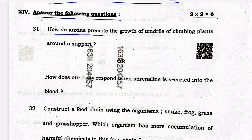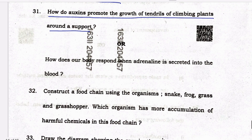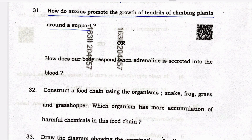How do auxins promote the growth of tendrils in climbing plants around a support? Auxins promote the growth of tendrils by stimulating cell elongation on the shaded side of the tendril. When a tendril touches the support, auxins accumulate on the opposite side, causing cells there to grow longer. This uneven growth makes the tendril curl around the support, helping the plant to climb.